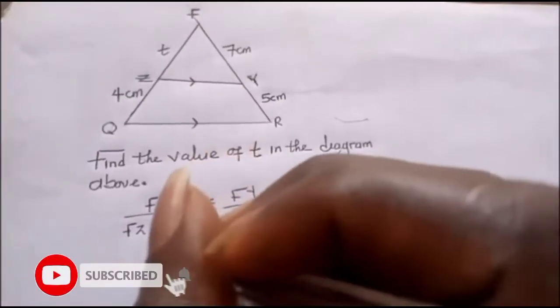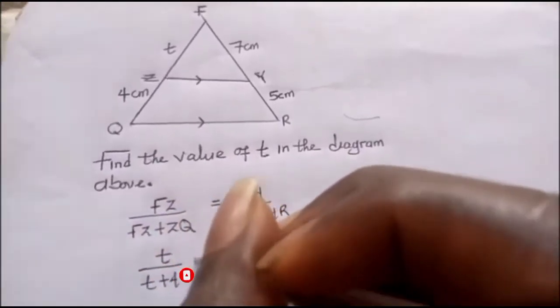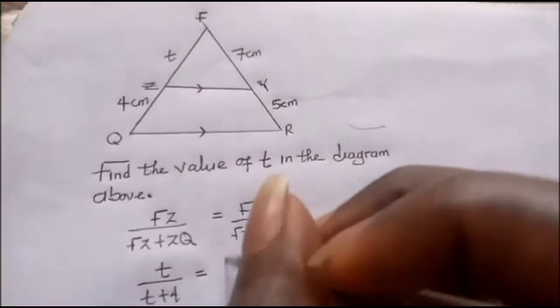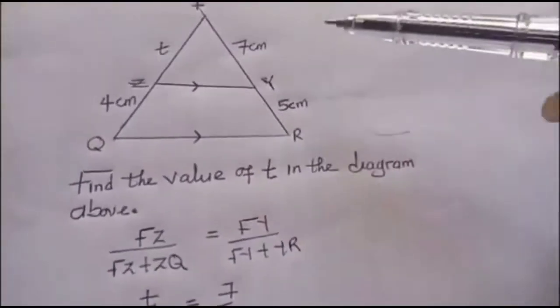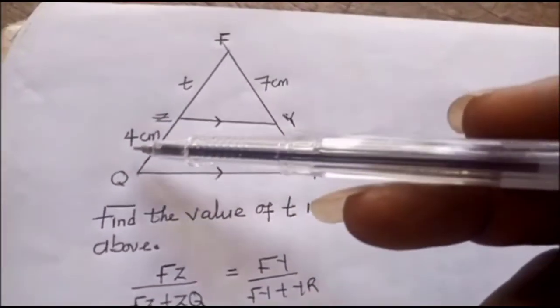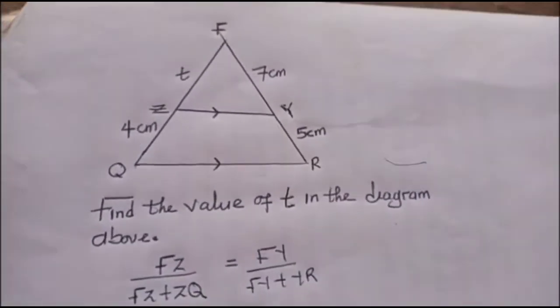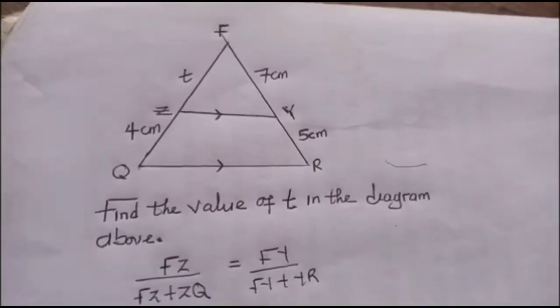We have t over t plus 4 equal to 7 over 12. So summation of 7 and 5 is 12, summation of t and 4 will give us t plus 4. So from here we can cross multiply. We have 12t equals 7 times t plus 4.